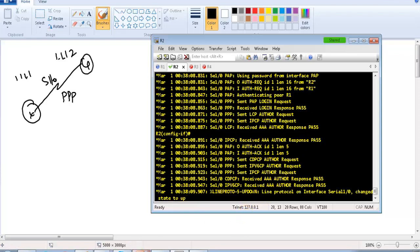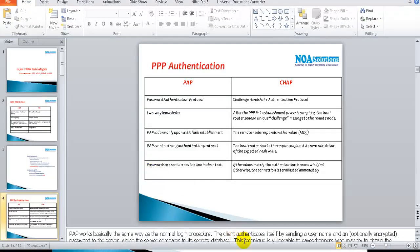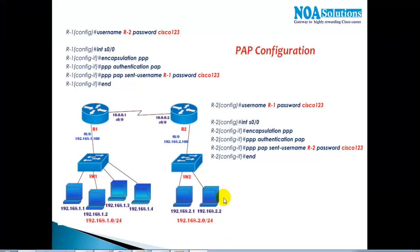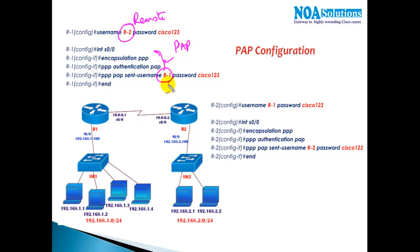The configuration matches exactly what was shown in the diagram: a username was created matching the exact remote hostname, PPP authentication was enabled on the interface with PAP protocol, and the send-username command was configured with the local hostname. The password must be the same on both sides.